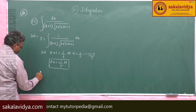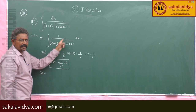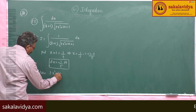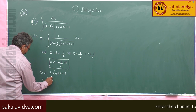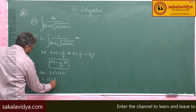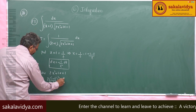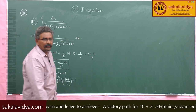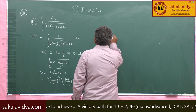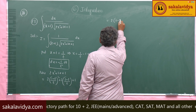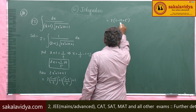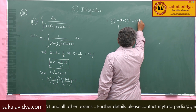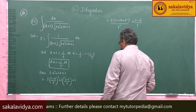Now express the quadratic factor in terms of t. 2x squared plus 3x plus 1 equals 2 times (1 minus t) by t whole squared, plus 3 into (1 minus t) by t, plus 1. This equals 2 times (1 minus 2t plus t squared) by t squared, plus (3 minus 3t) by t, plus 1.